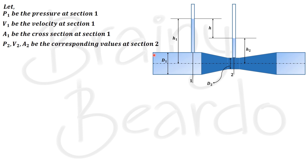Since the Venturimeter is used to find the discharge of the fluid, we use the continuity equation: Q = a1·v1 = a2·v2. To get a final expression for Q, we need to find the value of either v1 or v2 and substitute it into this equation. Let us call this the discharge equation, equation number 1.